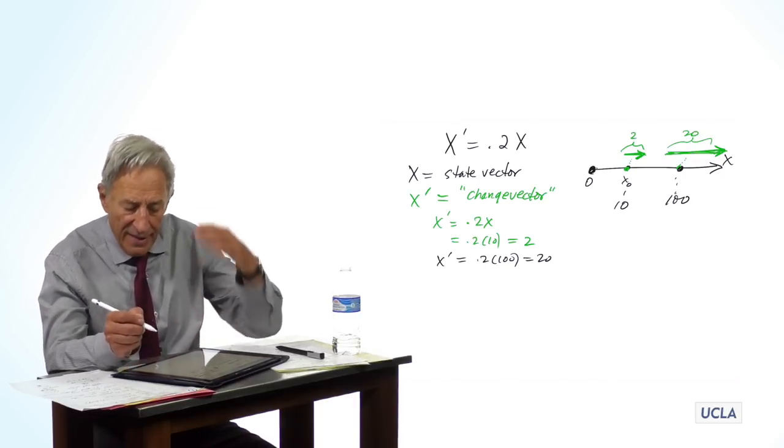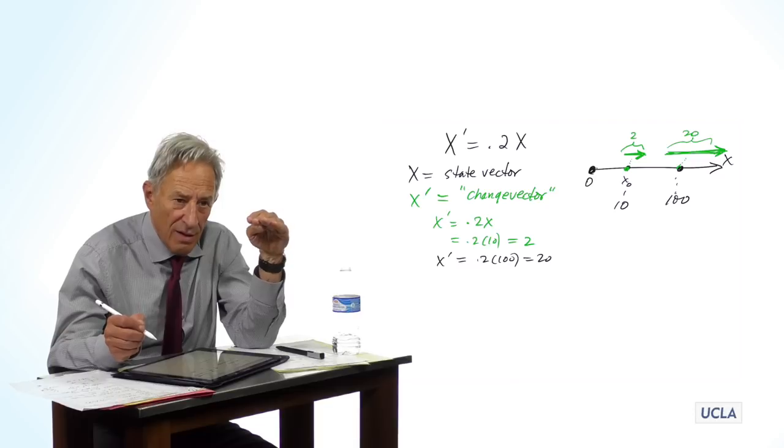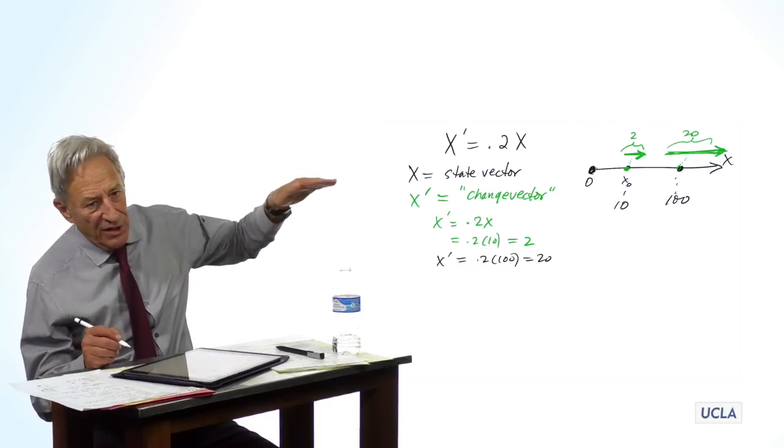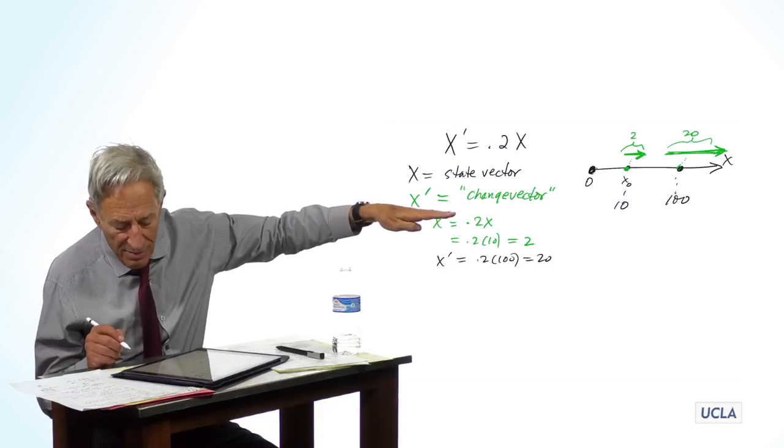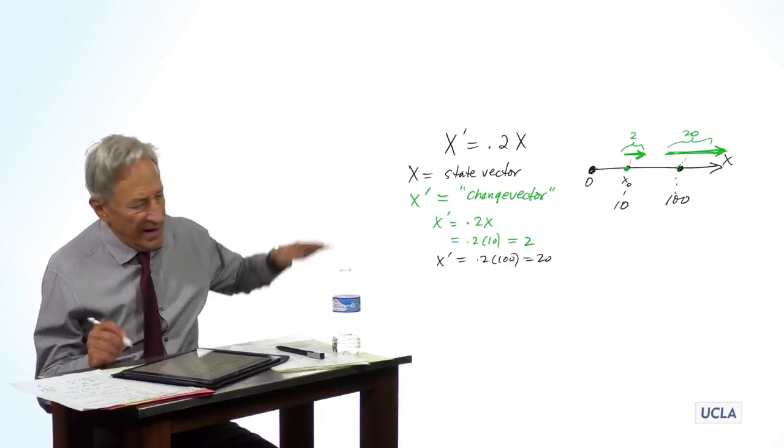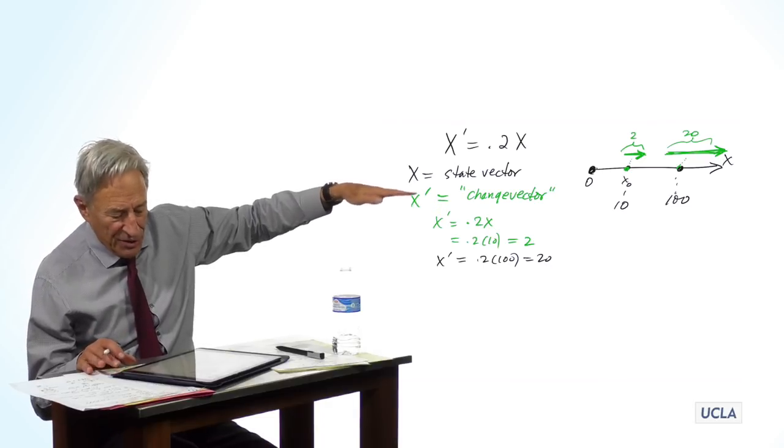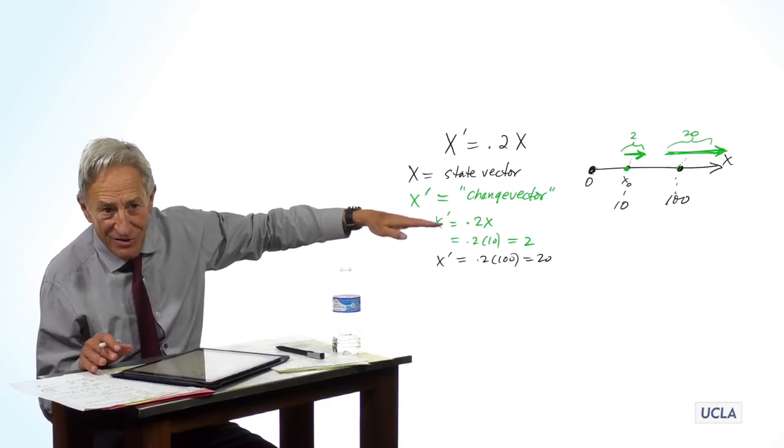So, by writing it in this way, you already begin to see what the change is going to be. The change in x0 is going to be to go to the right because that's what the change vector is telling it to do. That's going to put you at a different point.